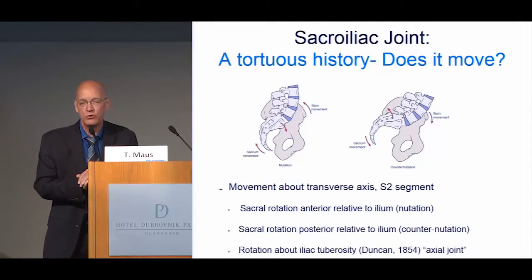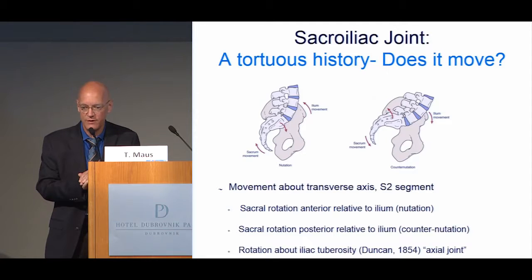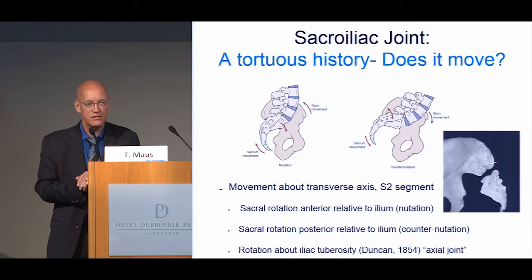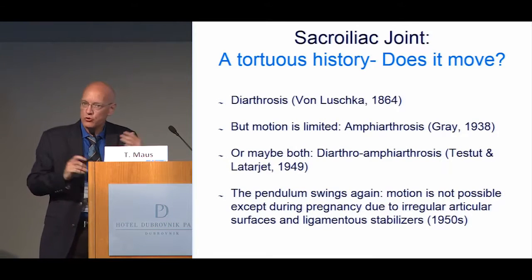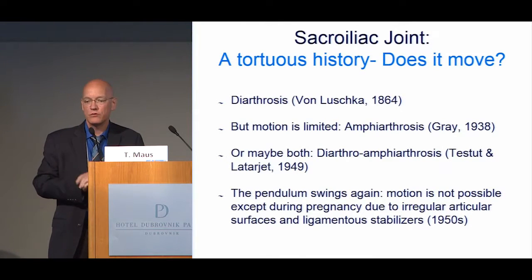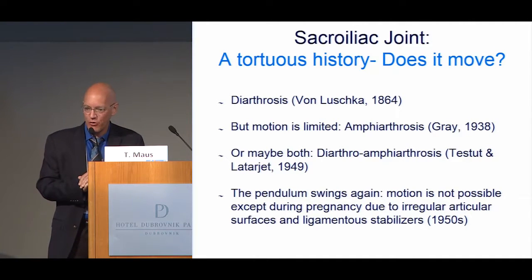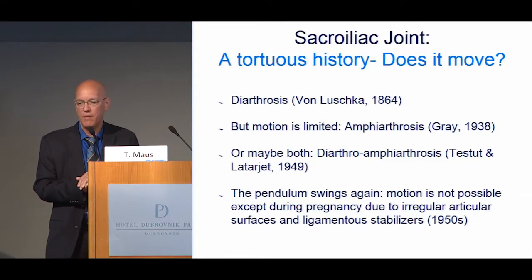The major motions of the sacroiliac joint were defined as nutation — sacral rotation anterior relative to the ilium — and counter-nutation, where the sacrum rotates posterior relative to the ilium. This rotation occurs about an axial joint, in large quotes, because it does not have synovium at the S2 level. There's a little protuberance on the iliac side and a corresponding depression on the sacral side. With this notion that it does indeed move, it was deemed a diarthrosis by von Luschka, but later authors said this motion is limited, so they called it an amphiarthrosis, and still later a diarthro-amphiarthrosis.